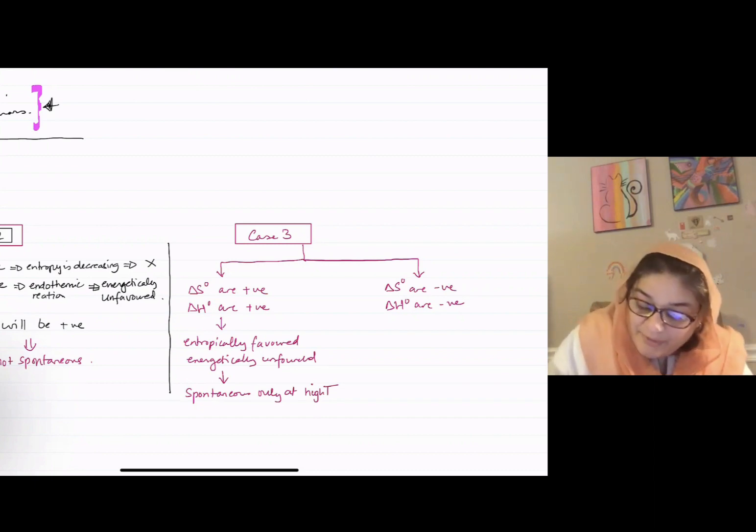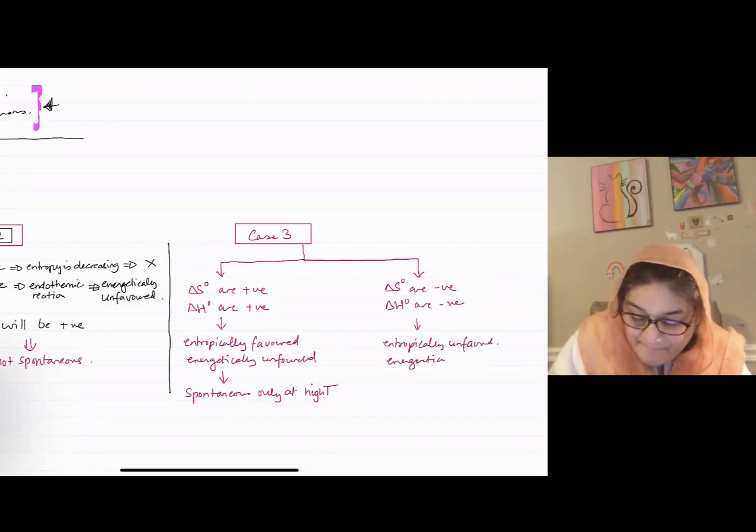When we have both values that are negative, the process is entropically unfavored and energetically favored. So those kinds of processes are spontaneous only at low T.